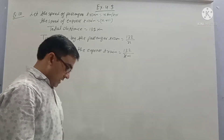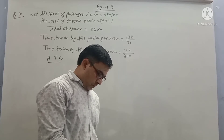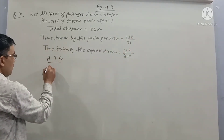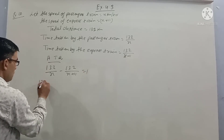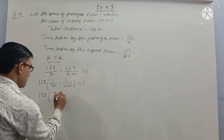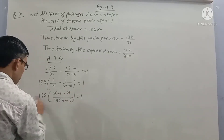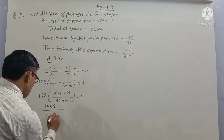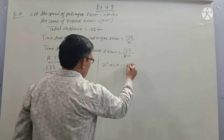Total distance is 132 km. Time taken by passenger train is 132 upon x. Time taken by express train is 132 upon x plus 11. According to the question, the difference is 1 hour: 132 times (x plus 11 minus x) upon x(x plus 11) equals 1. Simplifying: 132 times 11 upon x(x plus 11) equals 1. Cross multiplying gives x squared plus 11x minus 1452 equals zero.